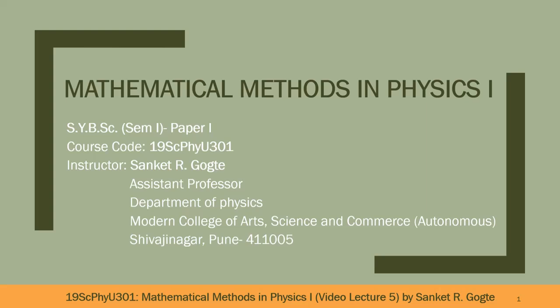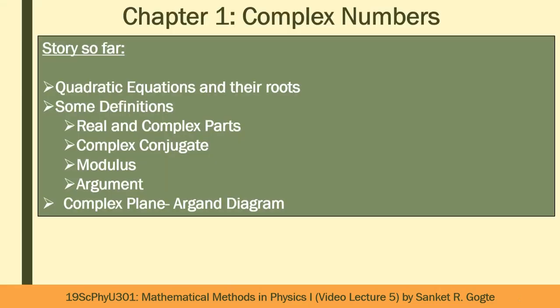Hello everyone. Welcome to this video lecture of 19SC PHY U 301. We have been discussing the first chapter, complex numbers, and this is the story so far. We discussed quadratic equations which are of the form ax² + bx + c = 0. The roots of this quadratic equation are given by x = (−b ± √(b²−4ac)) / 2a. Quadratic equations, even with real coefficients, can lead to complex roots, and that is why we discussed quadratic equations and their roots.